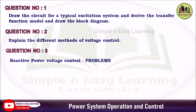In addition to these three questions, you can add one more: explain the steady state and dynamic response of the AVR loop. These are the selected important questions in Unit 3.